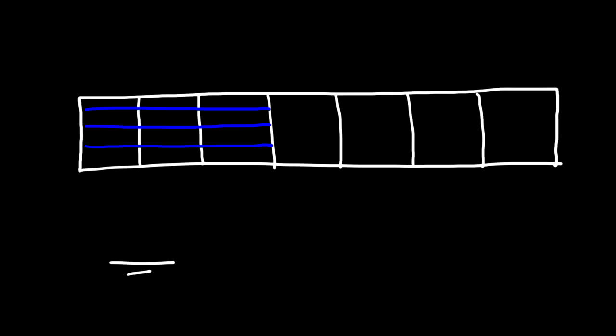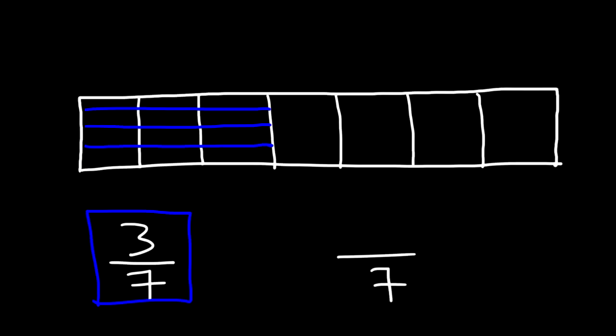Let's say three of those parts are shaded. What fraction of the rectangle is shaded and what fraction is not shaded? There are seven equal parts and three of those seven parts are shaded, so we could say three sevenths of the rectangle is shaded. Now out of the total seven parts,